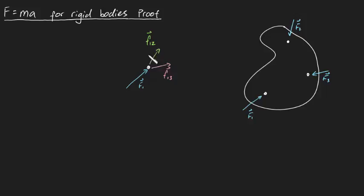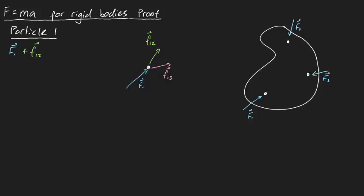Fortunately, we already know F equals MA for particles quite well, so let's write that down. For particle one — which is just one of our three particles which make up our assembly — we can apply F equals MA. We know that F1 plus F12 plus F13 is going to be equal to your mass of your particle, M1, times by your acceleration of your particle, A1. You might be thinking this doesn't bring us any closer to understanding the complicated motion of our rigid body, but rest assured, we're going to solve this.